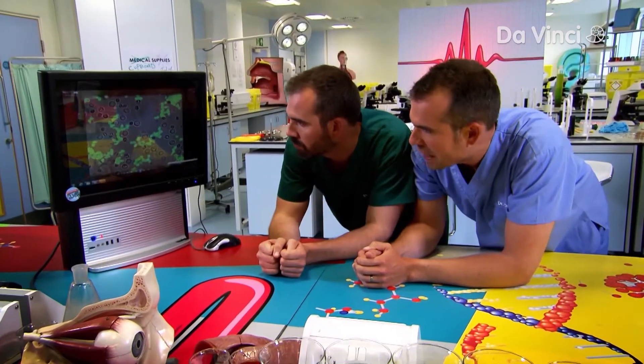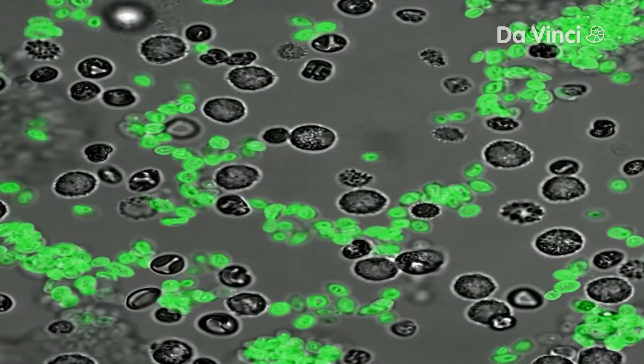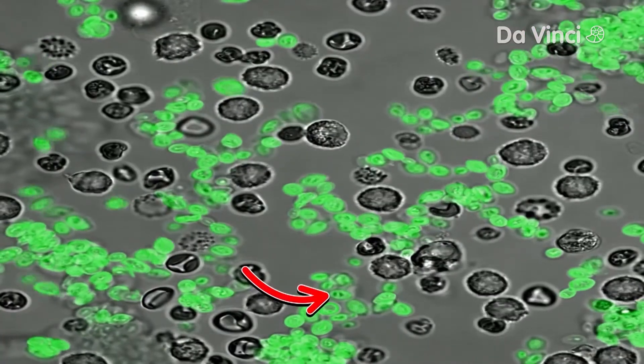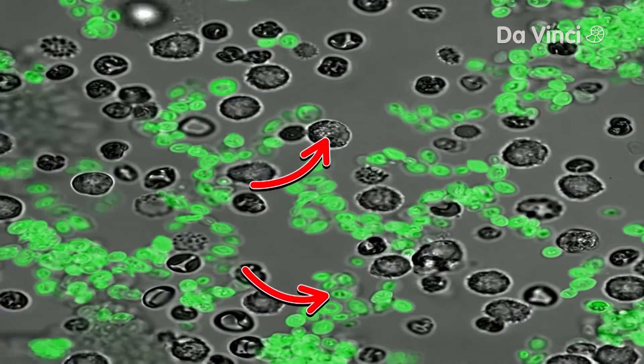Okay, so we can see a sped-up version of the fungus and Zahn's white blood cells. The green blobs, they're the deadly fungus, and the grainy black and white cells are Zahn's leukocytes.